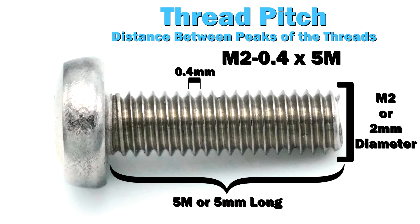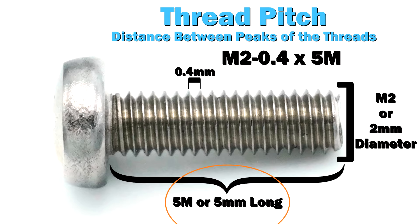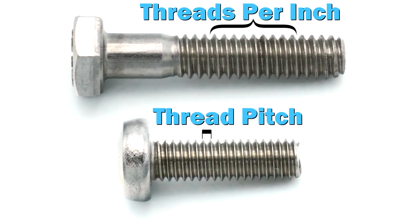So in other words, what this is saying: diameter, thread pitch — which is the distance between the two high points — and then the length is again from under the head to the end. That explains the difference between US threads per inch and metric thread pitch. Thanks for watching.